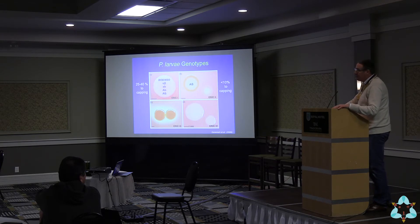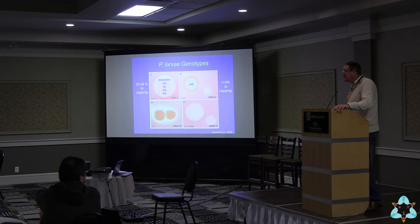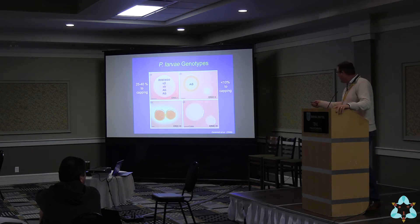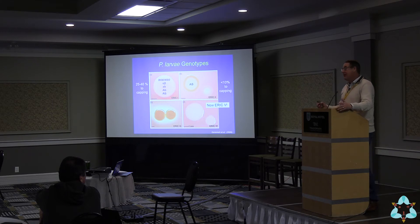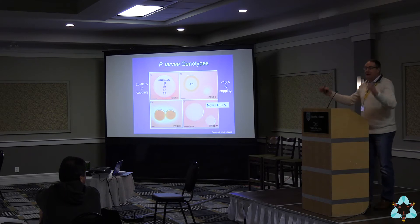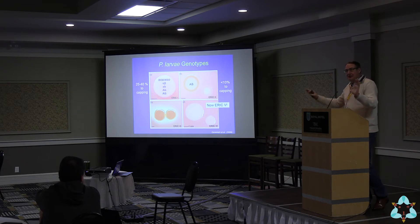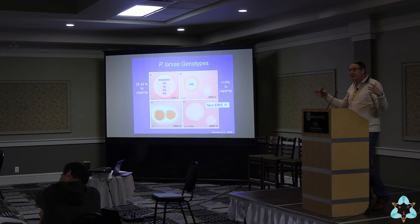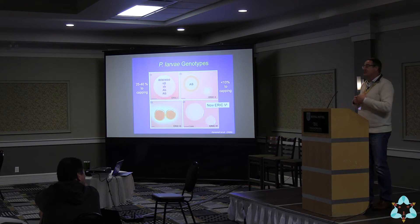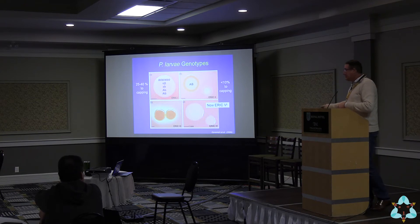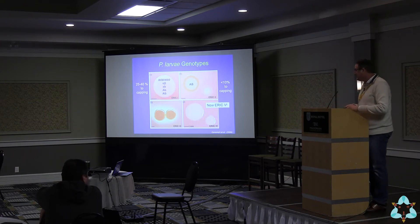ERIC-2 through ERIC-4 are fast killers, though ERIC-3 and ERIC-4 are exceedingly rare in the natural environment. We now have ERIC-5, isolated from honey in Spain — that's hot off the press this month. Just realize that for scientists studying this, there's more diversity in the different genetic strains of this bacterium.